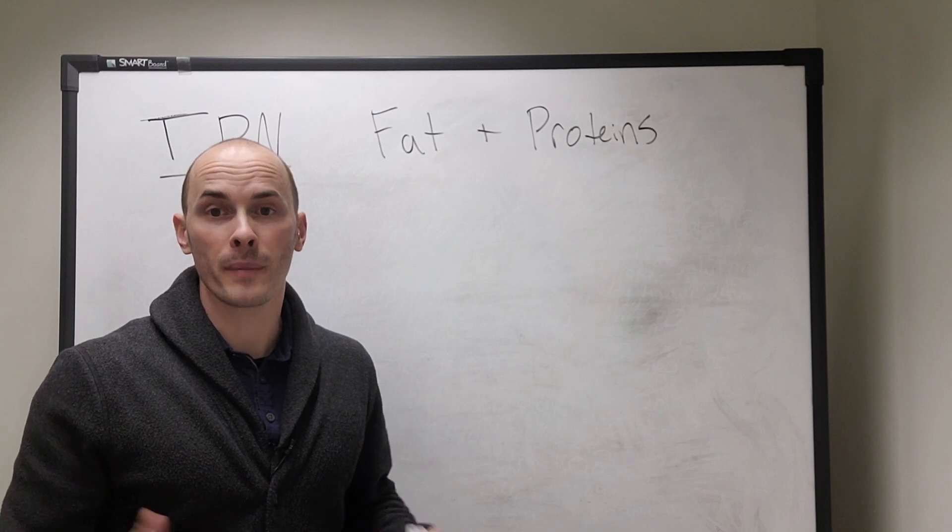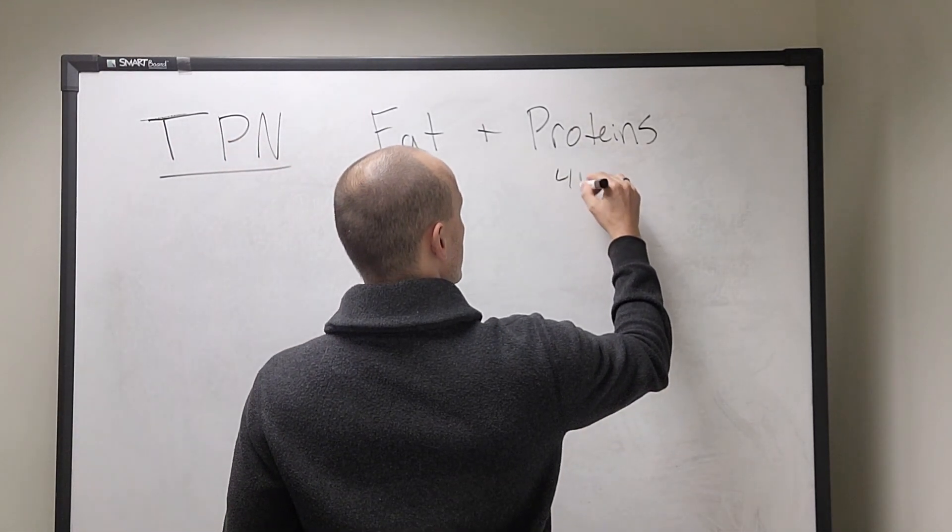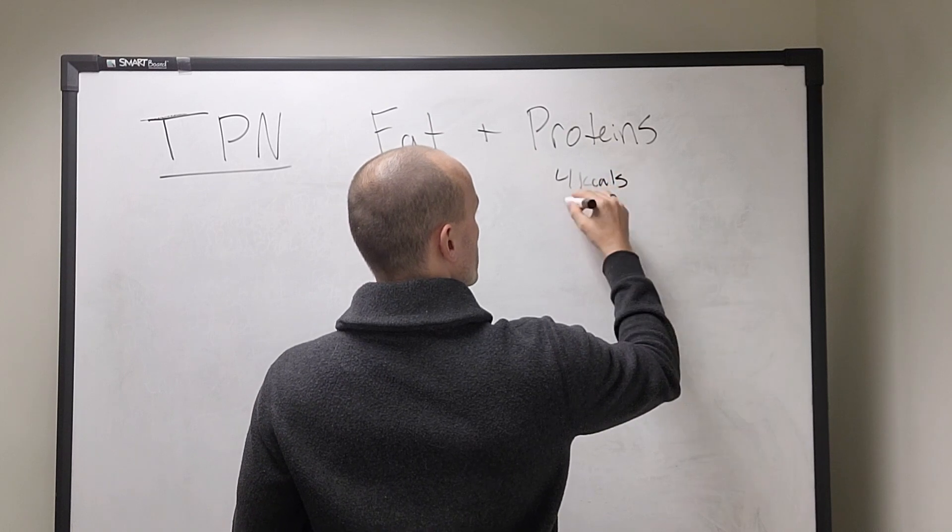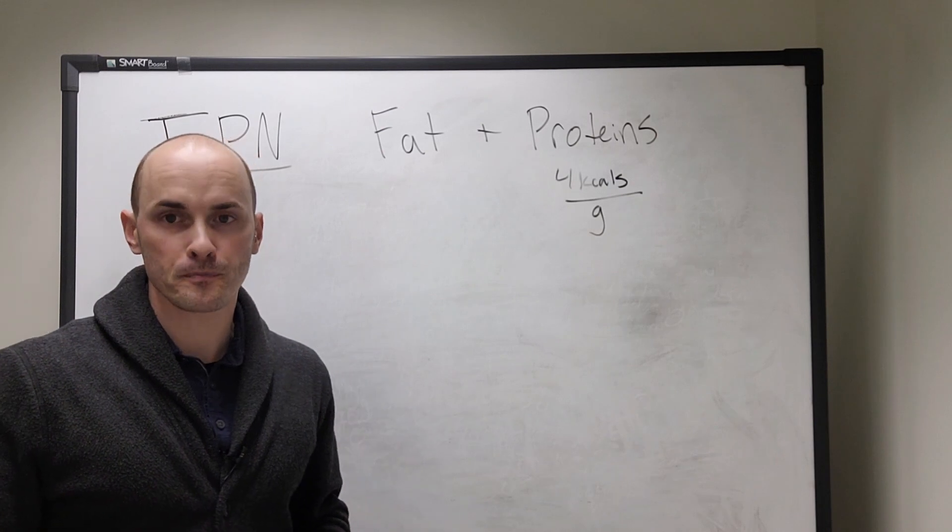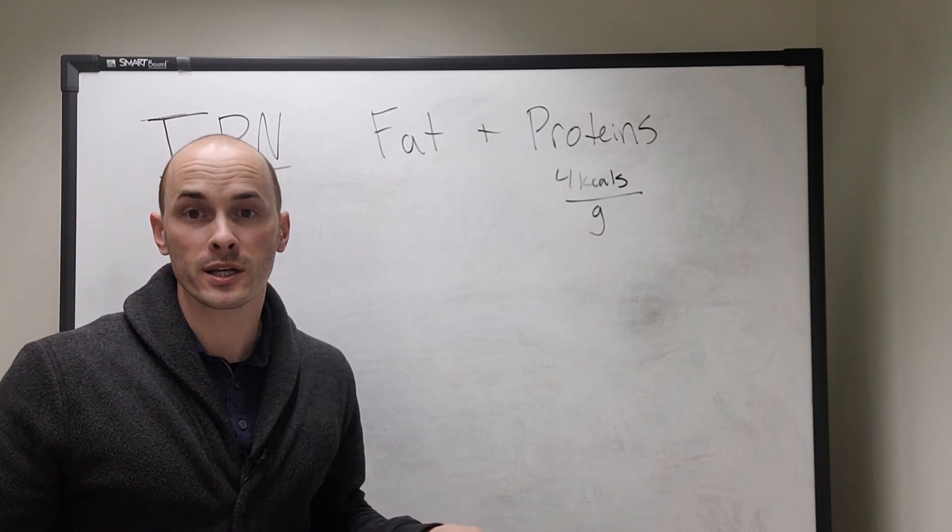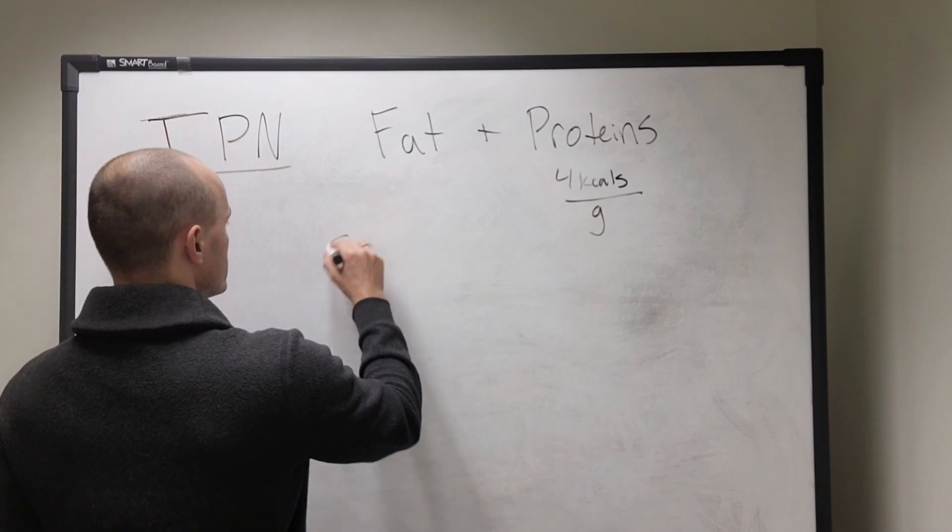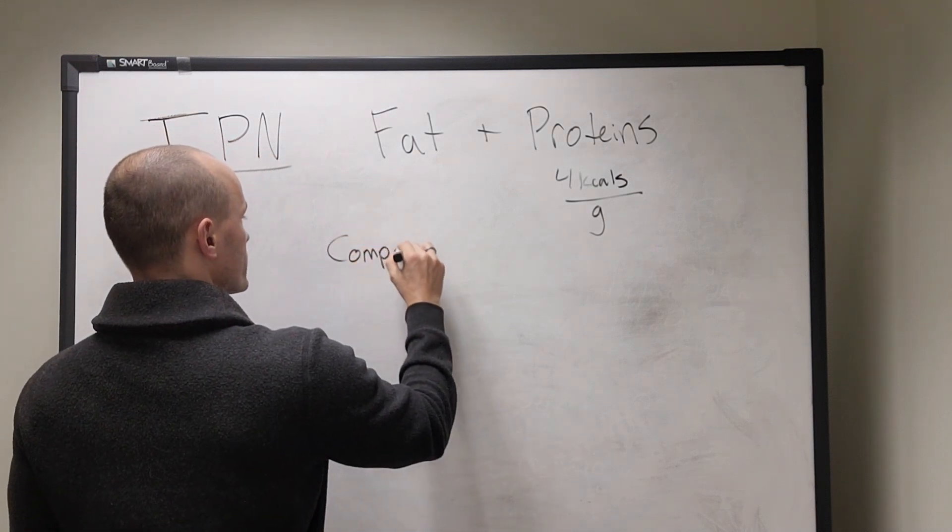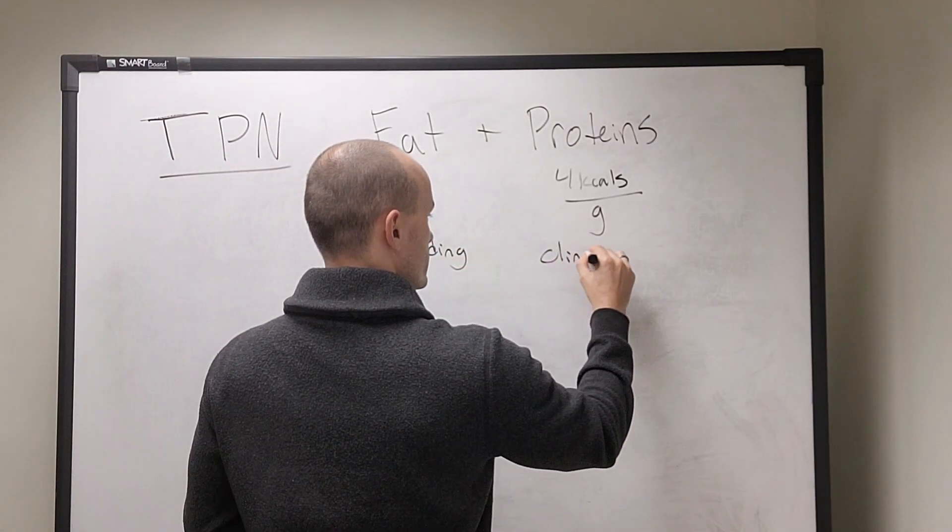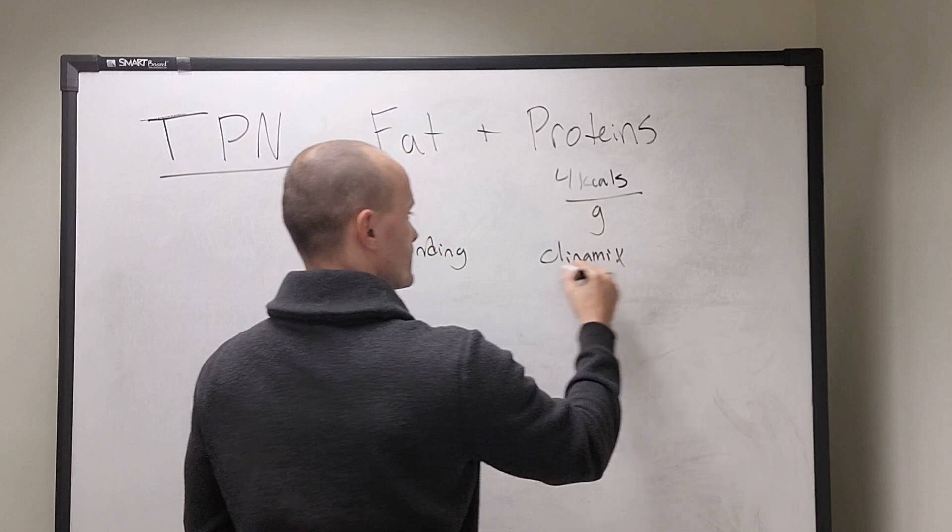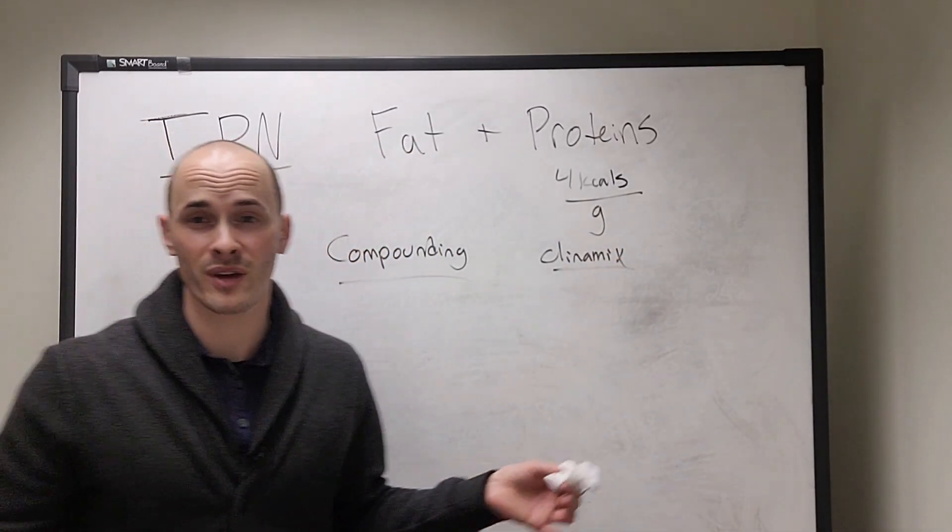So let's talk about protein. Protein is four kcals per gram. Now there's two different ways that we can do TPN, or at least that I've done TPN. And that is compounding and Clinimix.